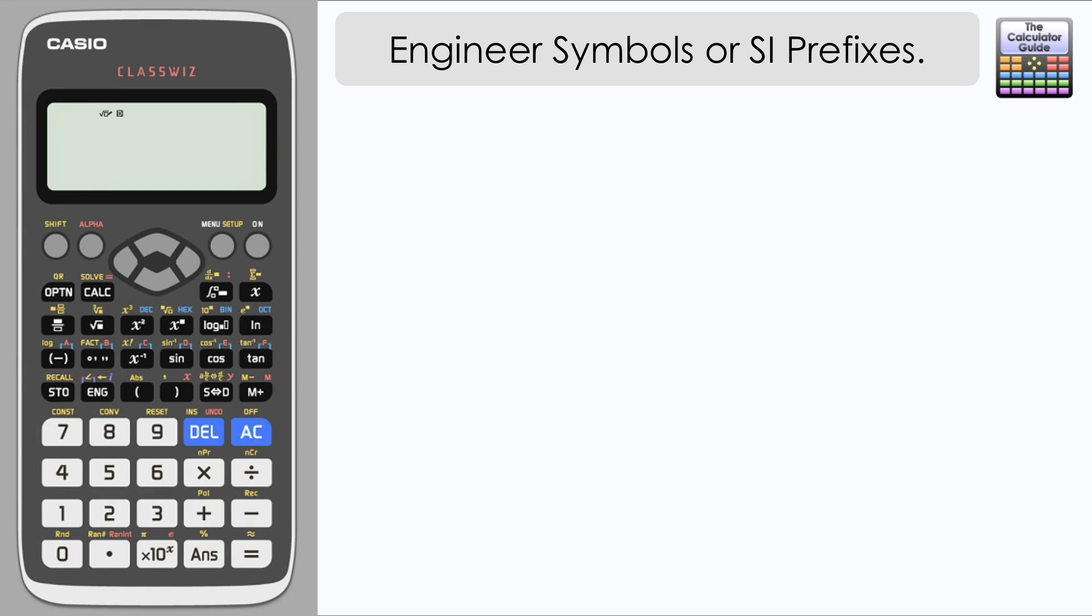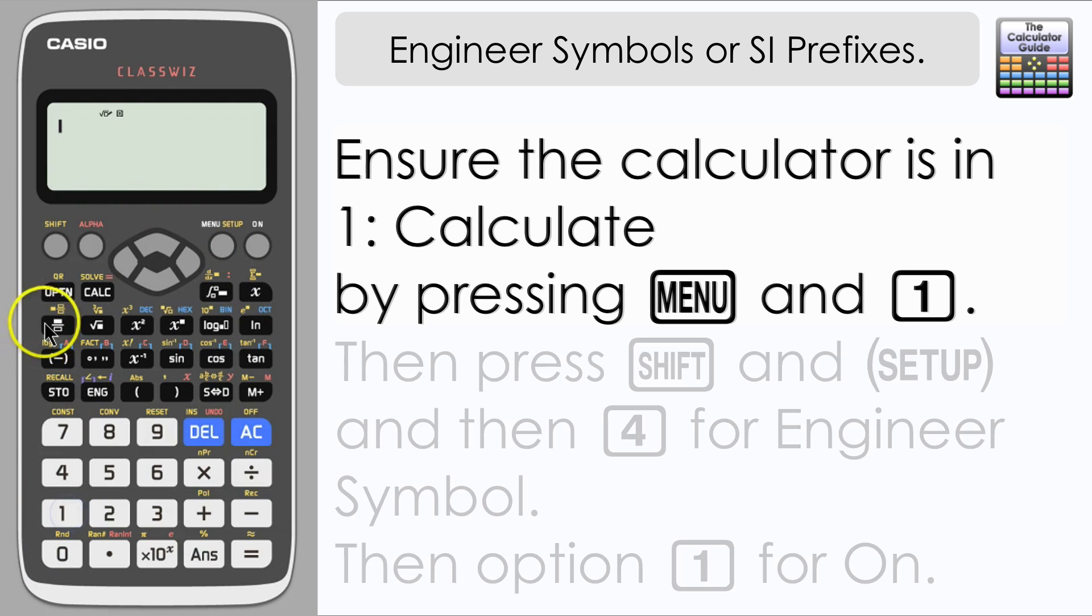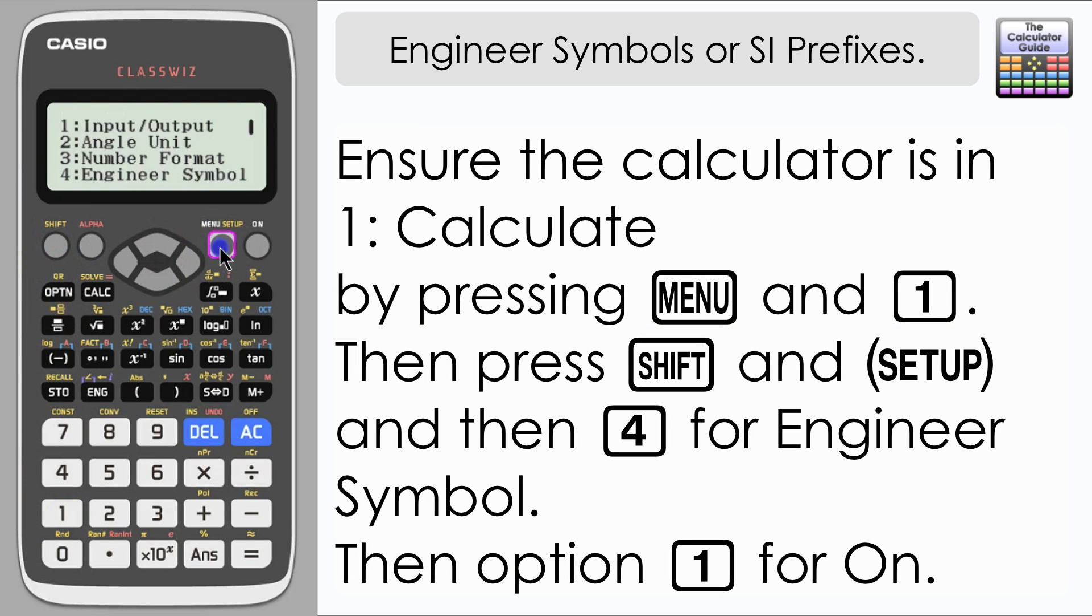To change the calculator so that your answer displays with an engineering symbol, first you need to ensure that you are in mode 1, Calculate, by pressing MENU and 1. Then press SHIFT and SETUP, and we want to select option 4 for Engineer Symbol, and then we can press option 1 for On.